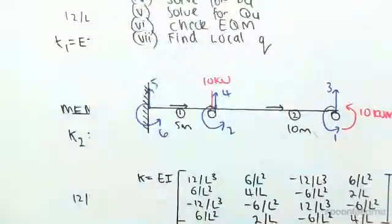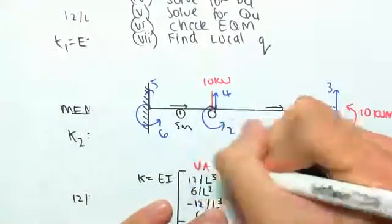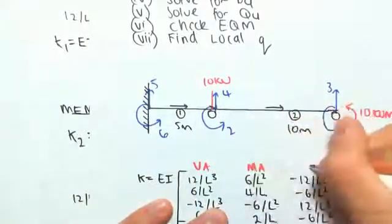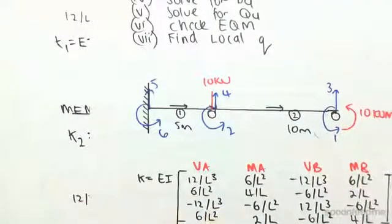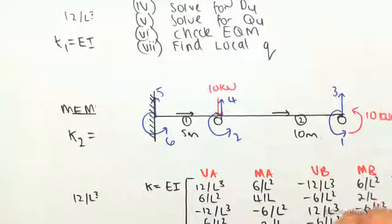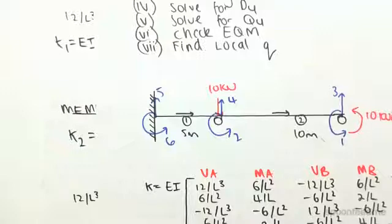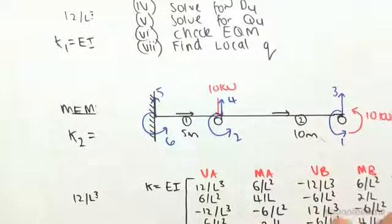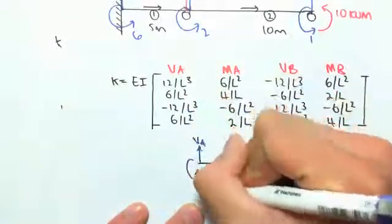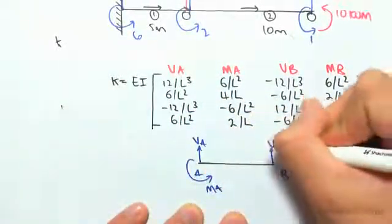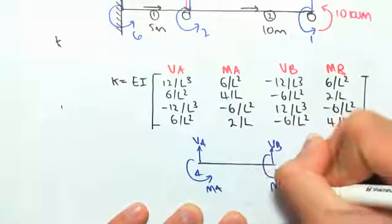So just think of this as vertical at A, moment at A, vertical at B, moment at B. Where, if we had a beam, so this is just a generic case, that would be A, point A, and point B. So that would be vertical A, that would be moment A, vertical B, moment B.